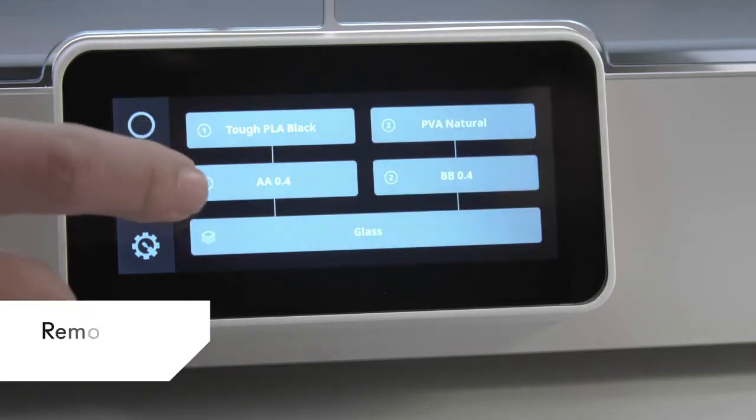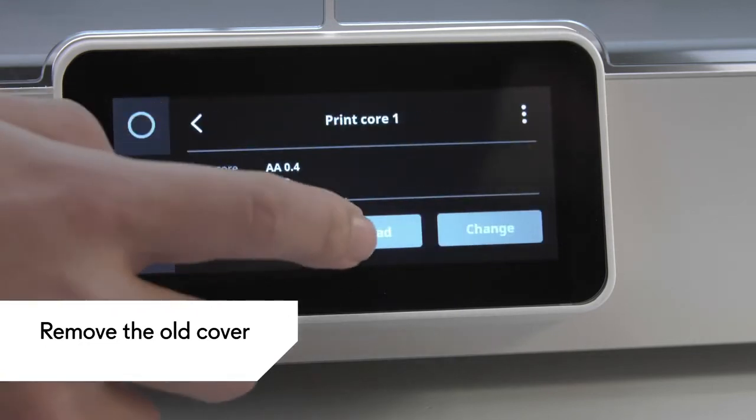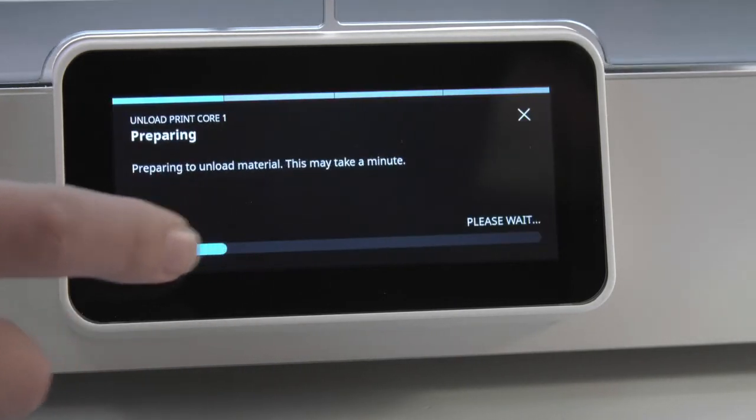First, remove both print cores. Go to the Configuration Overview and select Unload for each print core.